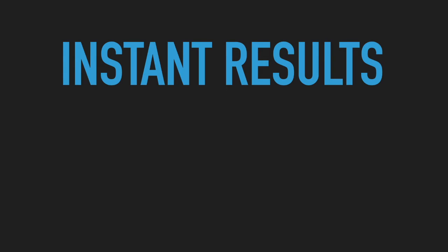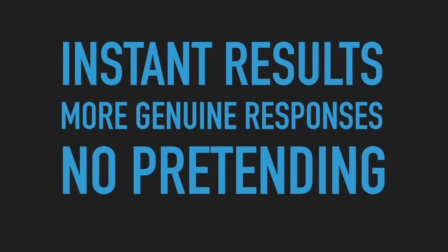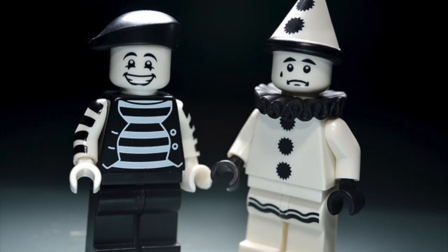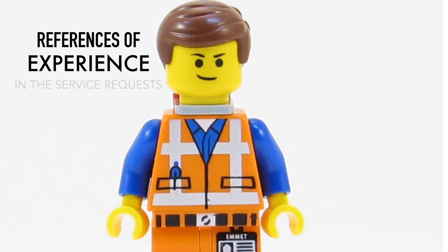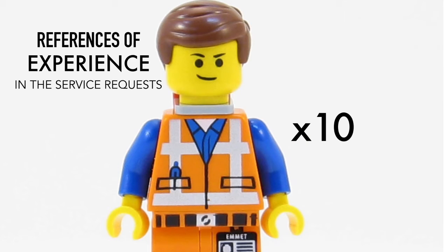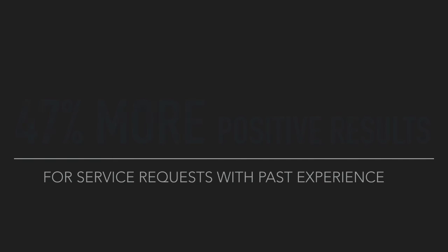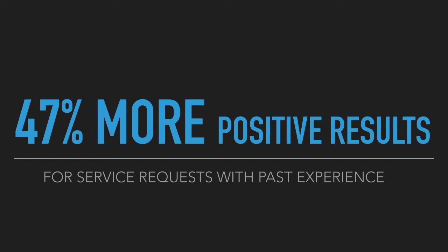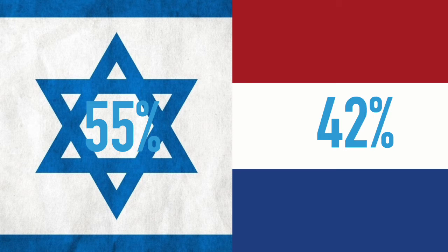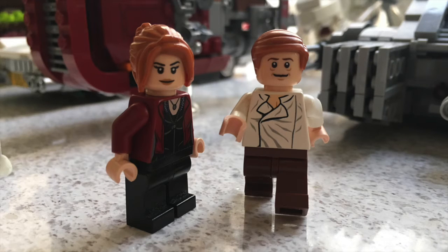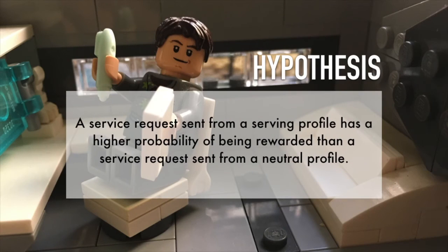The results of the experiment can be used immediately without needing generalization like lab experiment results, and participants' behavior was more genuine because they treated it as daily life. To test the hypothesis, they created four cells — a mix of gender and nationality — applied to each serving and neutral profile. Each profile included self-reported experience and 10 references from fake users. The results showed a total response rate of 47% higher for requests from serving profiles than neutral profiles. Israeli profiles were responded to more often than Dutch profiles, while differences between males and females were very small.